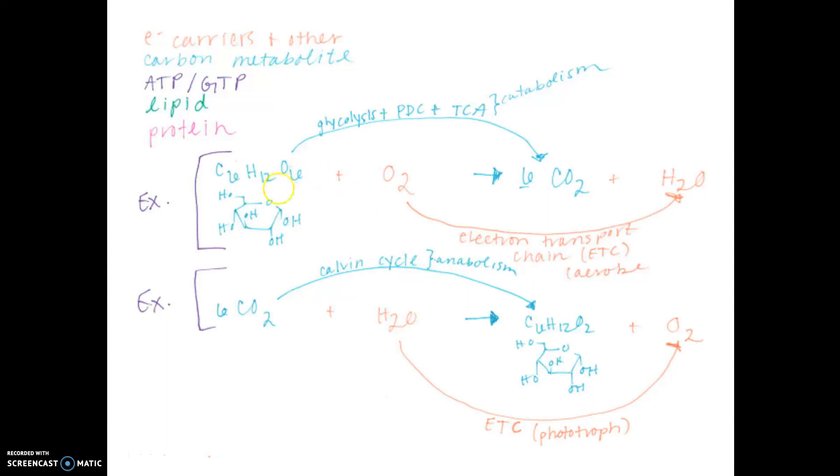As we've talked about up to this point, cellular respiration is the oxidation of carbohydrates to form CO2 and water. This is catabolism - glycolysis, the pyruvate dehydrogenase complex, the citric acid cycle, and the electron transport chain.